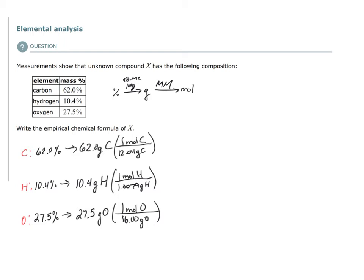So I have mole amounts now. 62 divided by 12.011 gives me 5.162 moles of carbon in this 100 grams of sample. 10.4 divided by 1.0079 gives me 10.318 moles of hydrogen in this 100 gram sample. And 27.5 divided by 16 gives me 1.719 moles of oxygen in this 100 gram sample.